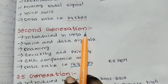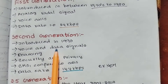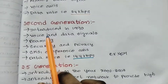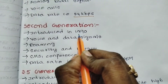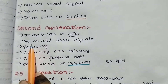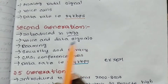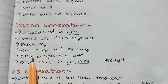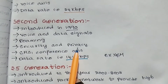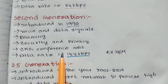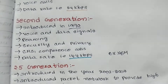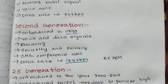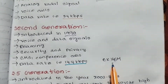The second generation, 2G, was introduced in the 1990s. It introduced both voice and data signals, and also provided roaming, security, privacy, SMS, and conference calls. The data rate is 144 Kbps. An example is GSM.